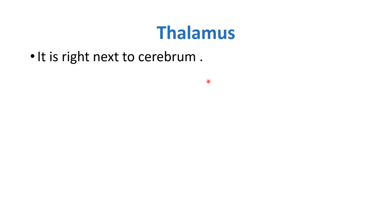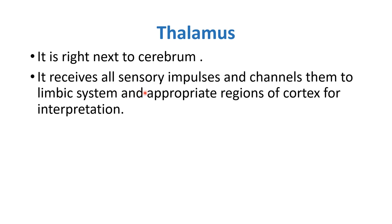The next part of the forebrain is the thalamus, located right next to the cerebrum. It receives all sensory impulses and channels them to the limbic system and appropriate regions of the cortex for interpretation.